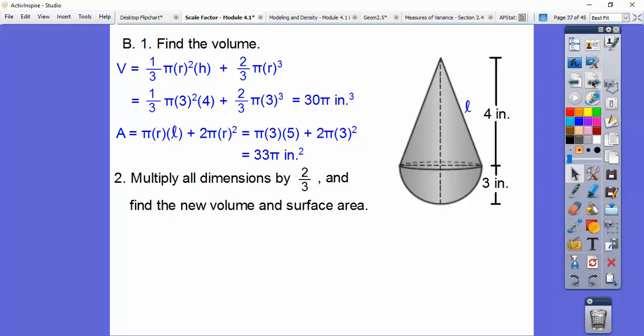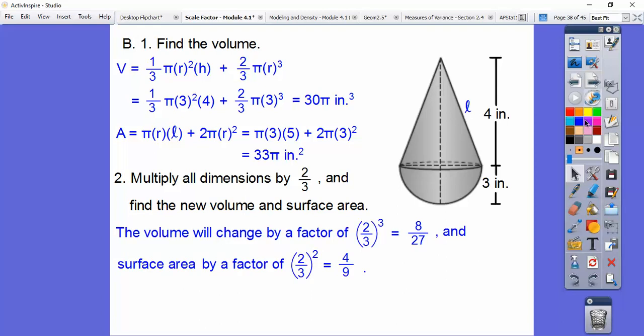Now let's multiply all the dimensions by two-thirds. That's going to be our scale factor and find the new volume and surface area. The volume is going to change by two-thirds cubed. It's your scale factor cubed. Two cubed is 2 times 2 times 2, or 8. Three cubed is 3 times 3 times 3, or 27. So the volume is going to change by a factor of 8 27ths. The surface area is going to be two-thirds squared, which is 4 9ths.